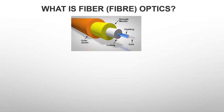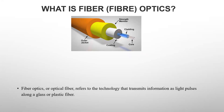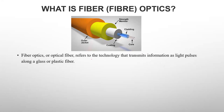Fiber optics, or optical fiber, refers to the technology that transmits information as light pulses along glass or plastic fiber. Instead of using electrical signals, we are using light to transmit information from one point to another. The advantage of light is that it travels with a speed of 3×10⁸ meters per second, enabling high and fast data transfer using glass or plastic fiber.